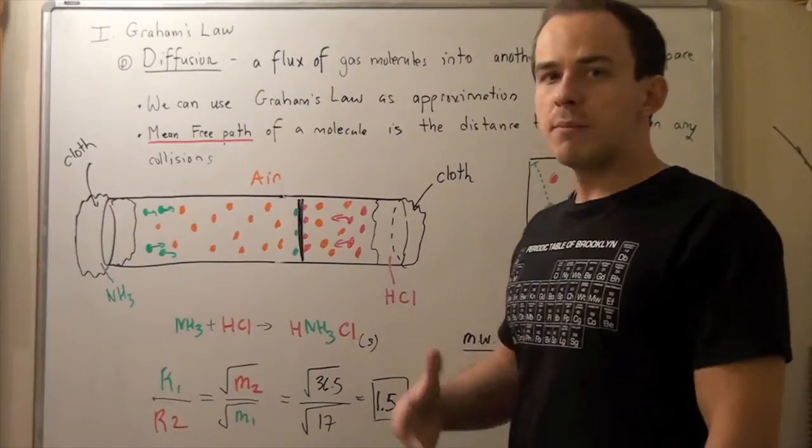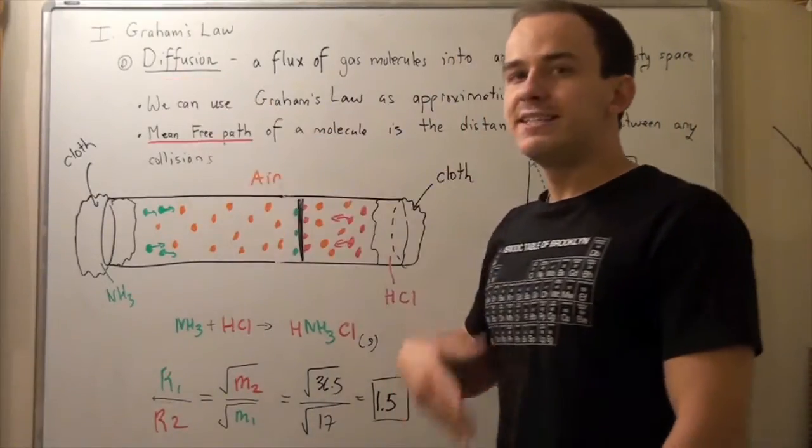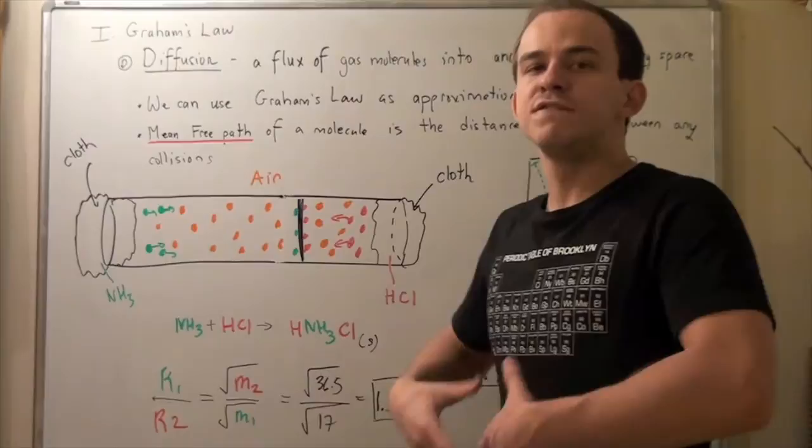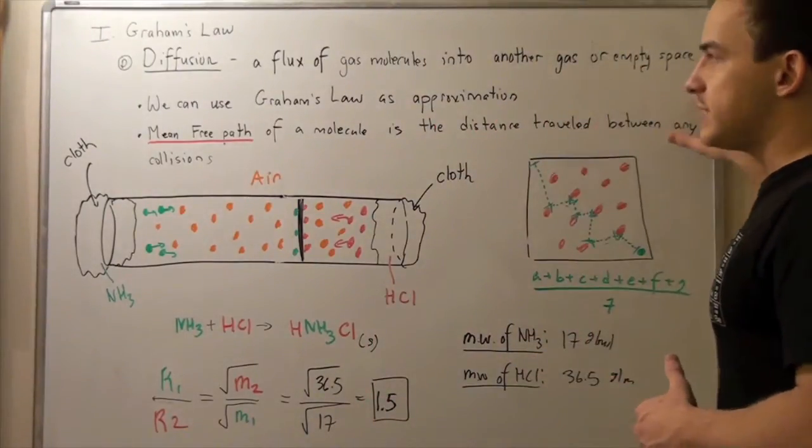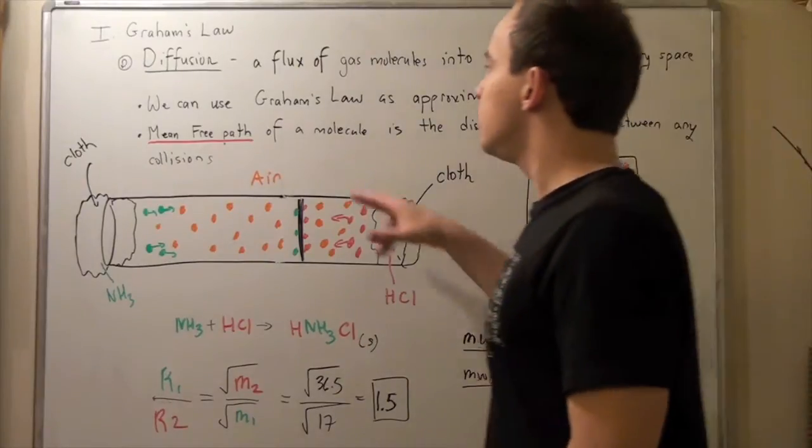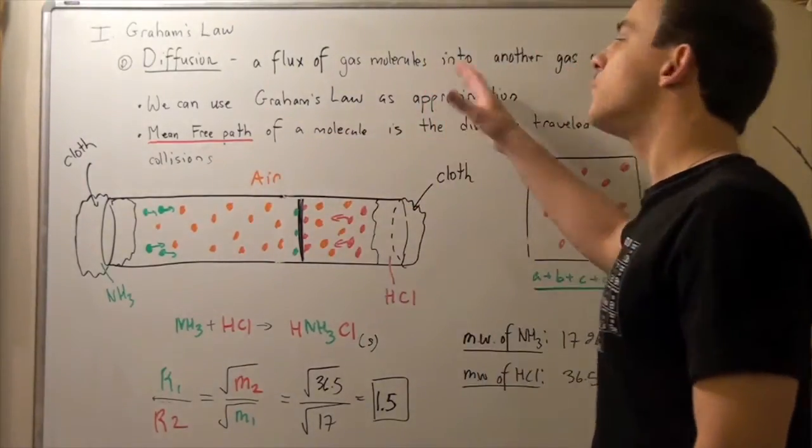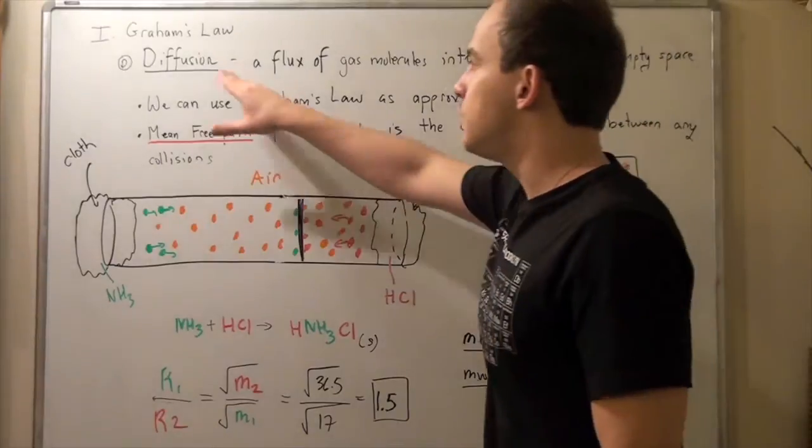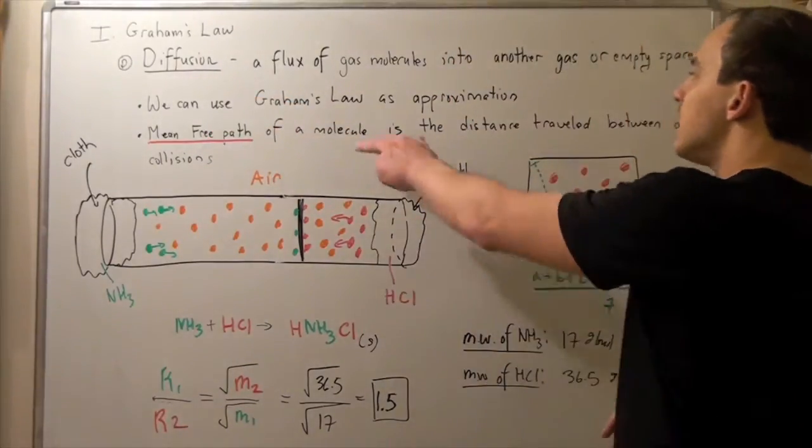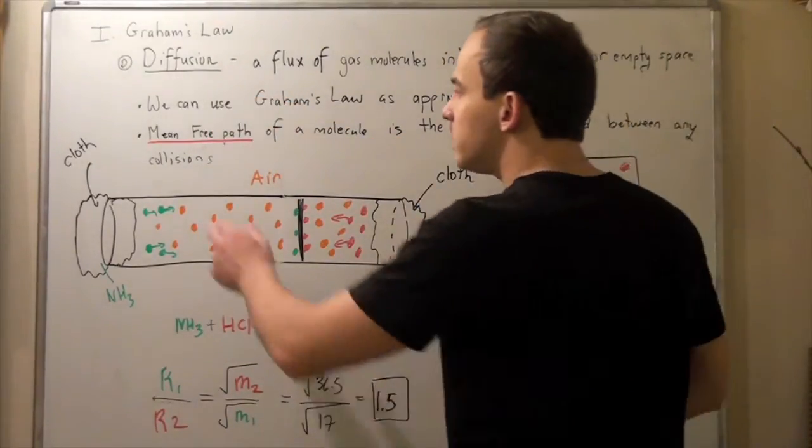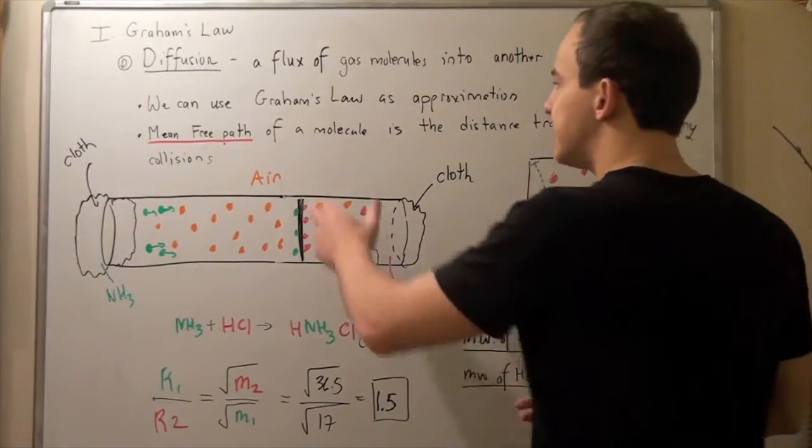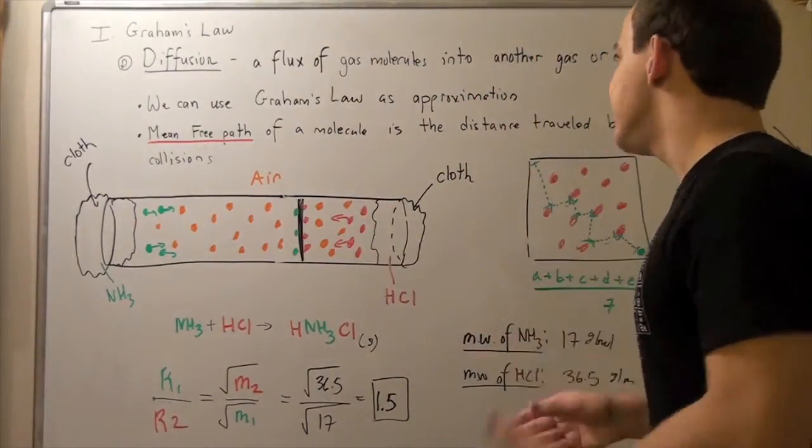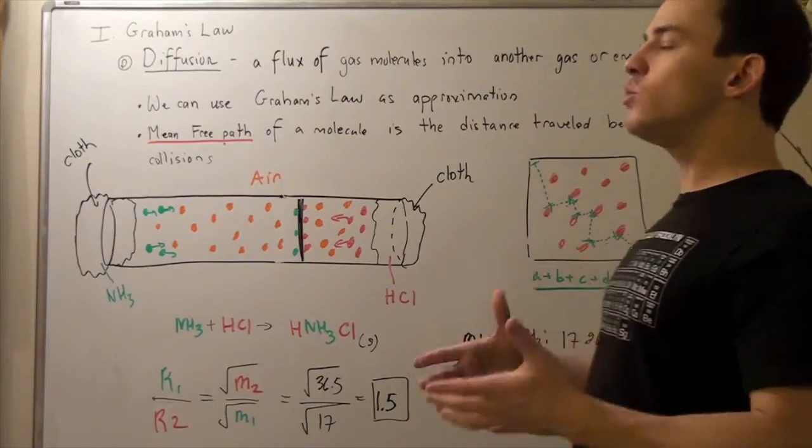Now we're going to talk about something called diffusion. Diffusion is the movement or the flux of one type of gas molecule into another gas or an empty space. And now we can use Graham's Law to approximate the rates of diffusion. Now the reason that we approximate is because of something called mean free path. The average or the mean free path of a gas molecule is the distance it travels between any two collisions.